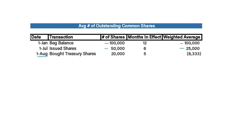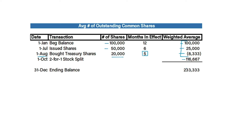On August 1st we buy 20,000 treasury shares, which are in effect for five months (August through December), so we multiply 5/12 times negative 20,000. Then for a two-for-one stock split, we take the balance before the split and add it to the total shares. Our ending weighted average is 233,333 shares.